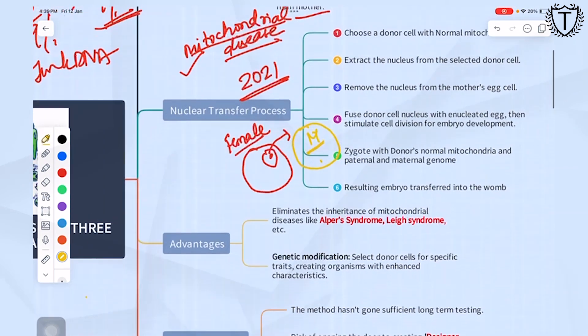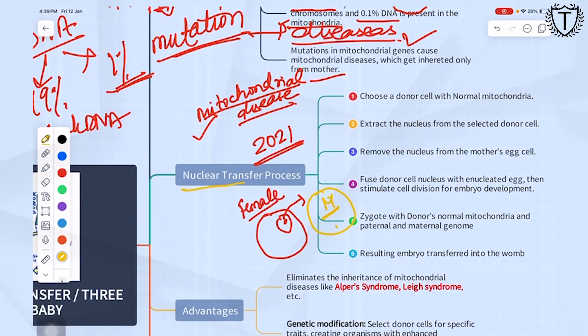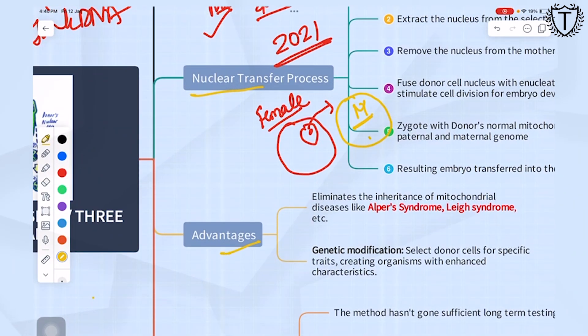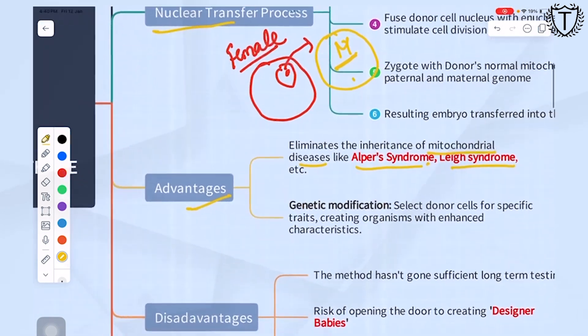This process is done in order to avoid such diseases. The number one advantage is that it eliminates the inheritance of these diseases. Two names are given: Alpers syndrome and Leigh syndrome. These can also be asked as options: which of the following is a mitochondrial disease.